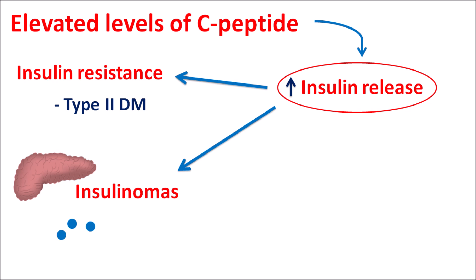Insulinomas cause proliferation of beta cells and release of more insulin, leading to elevated C-peptide levels. High C-peptide levels may indicate insulinomas, and during treatment, these levels are reduced, indicating the insulinomas are responding to therapy. C-peptide levels are also elevated when anti-diabetic agents such as sulfonylureas, which increase insulin secretion from beta cells, are used.